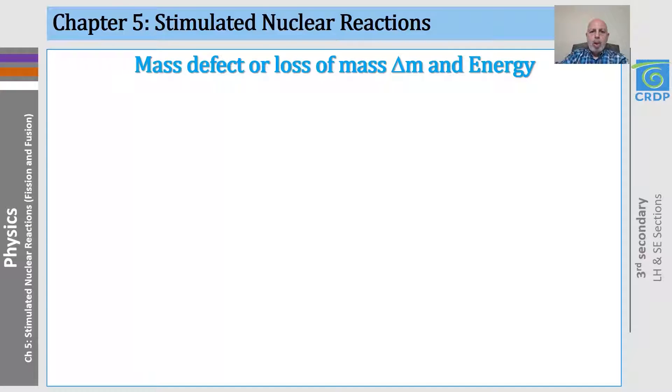Now we all know that in each reaction there are reactants and products. In nuclear reactions, the total mass of the reactants is different from the total mass of the products.